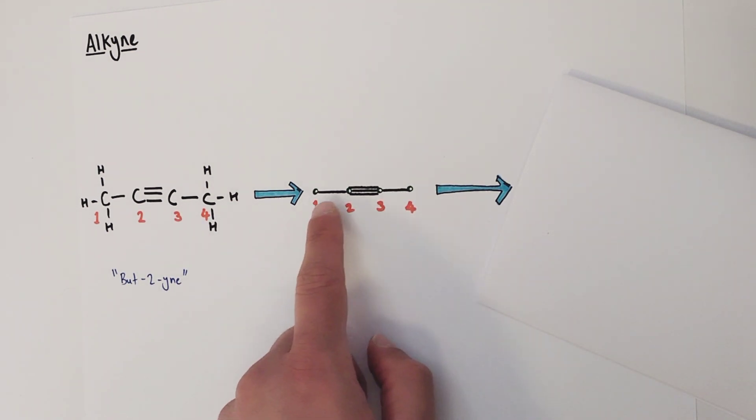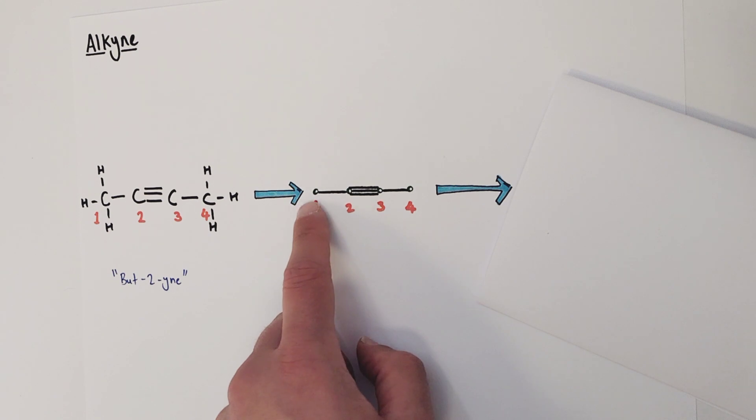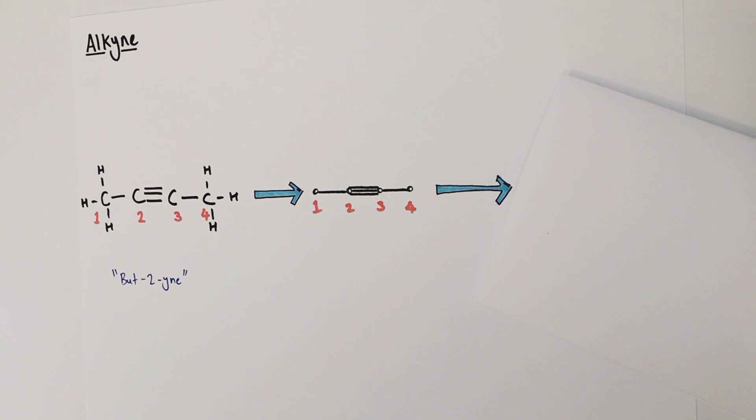So hopefully we've drawn similar things ideally. So as before, we've got four points for the four carbon positions. Intersections between lines represent the position of a carbon. End of a line represents a CH3 group. And between the second and third carbon, I've drawn three lines rather than one, representing our triple bond.